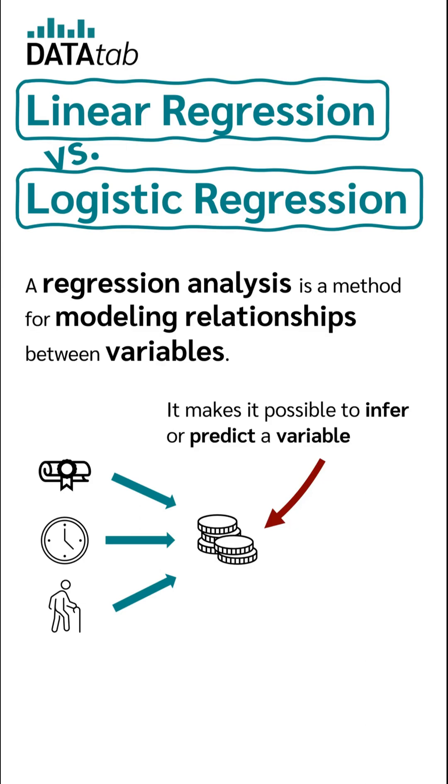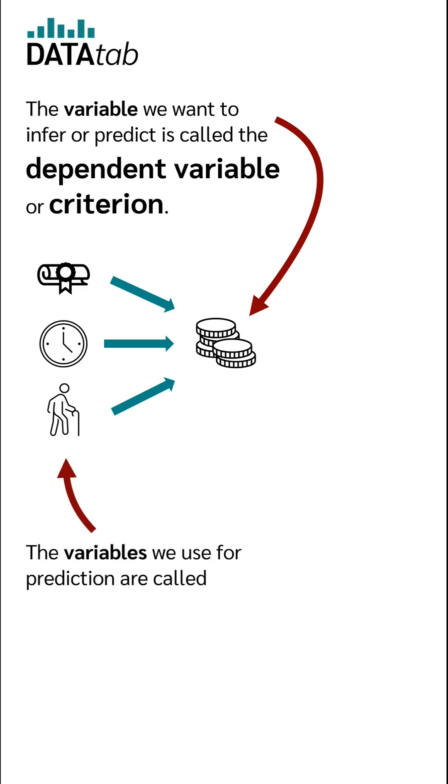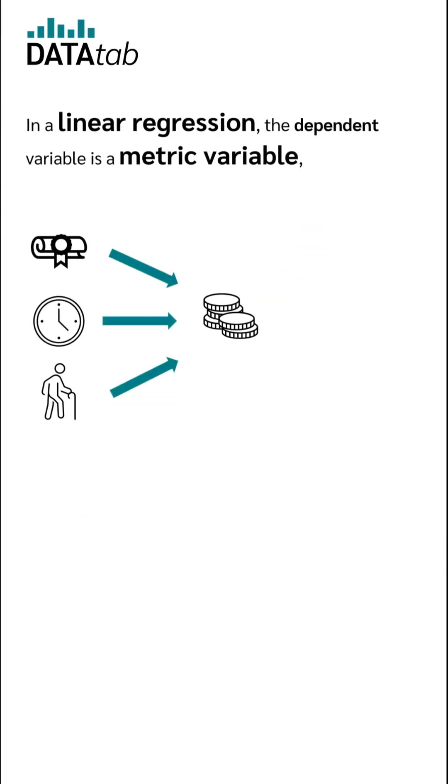It makes it possible to infer or predict a variable based on one or more other variables. The variable we want to infer or predict is called the dependent variable or criterion. The variables we use for prediction are called independent variables or predictors. In a linear regression, the dependent variable is a metric variable, for example salary or electricity consumption.